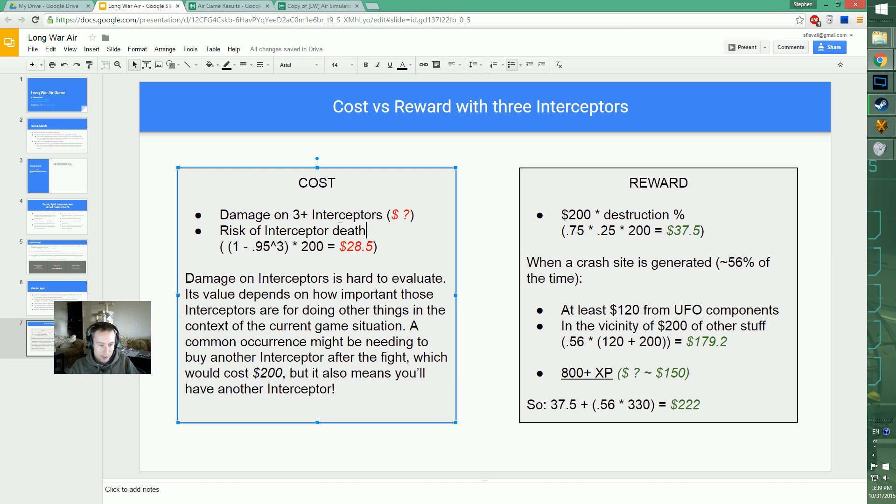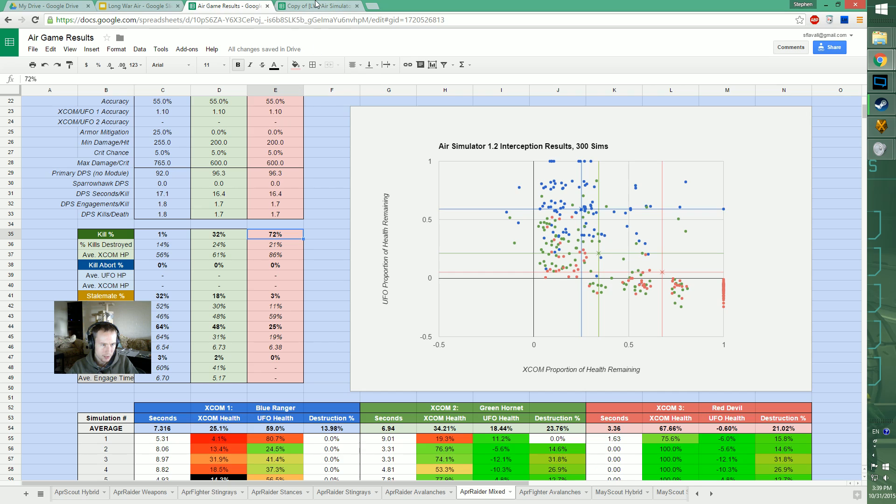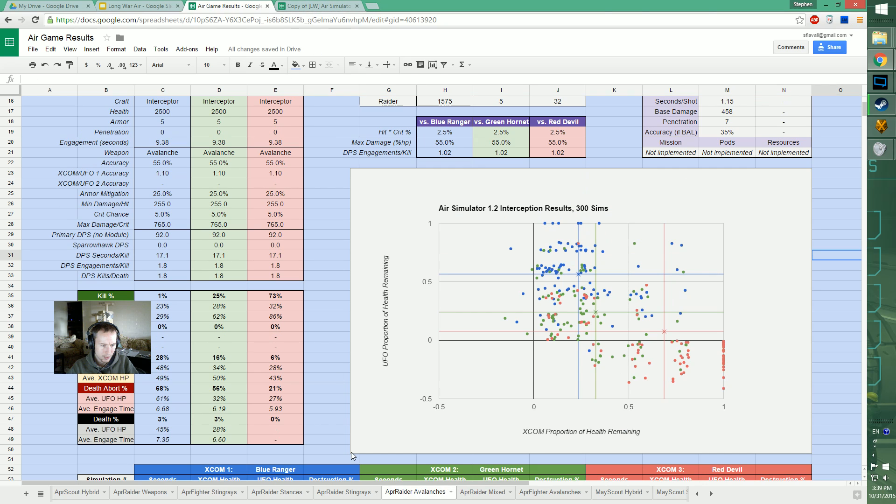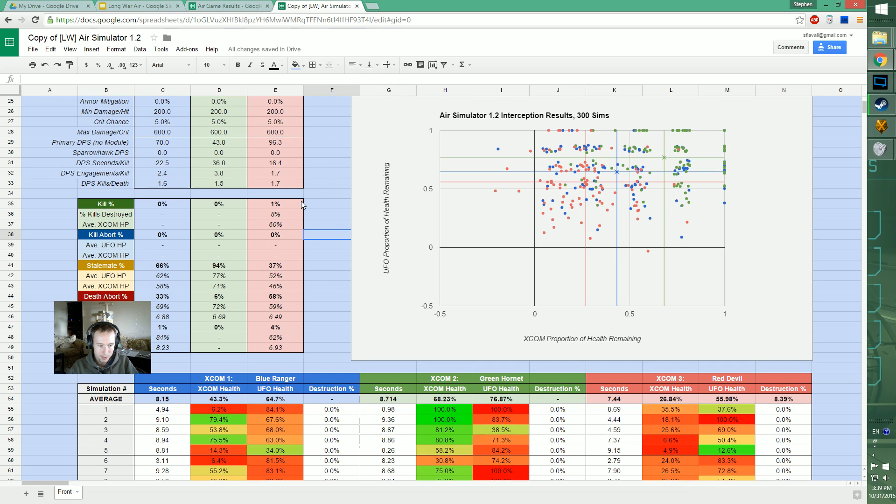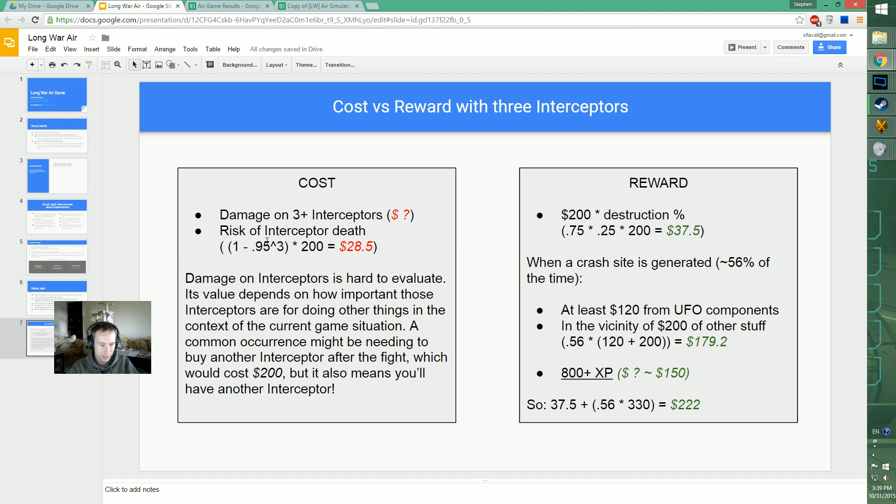Risk of interceptor death - in my sims it ended up being about $28.50 for killing a Raider. Every time an interceptor dies we have to pay $200. This number is higher than it should be - it's more like 3% chance of death per intercept, not 5%. An absolute upper bound is going to be $30 for chance of interceptor death.